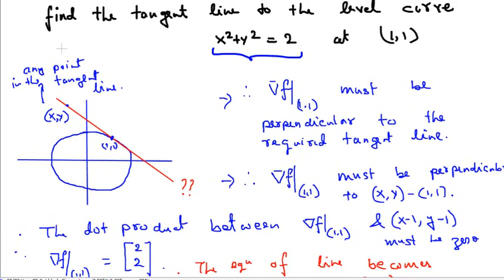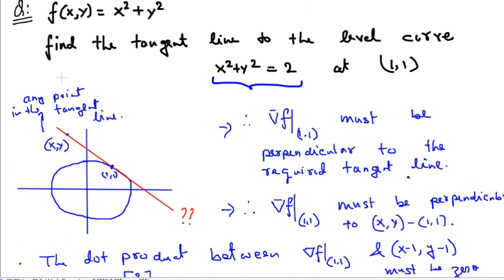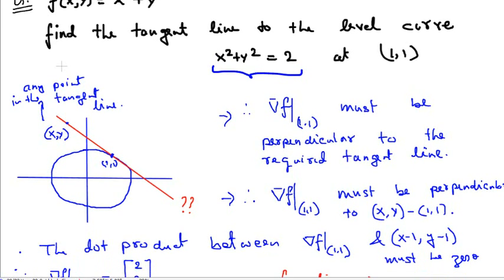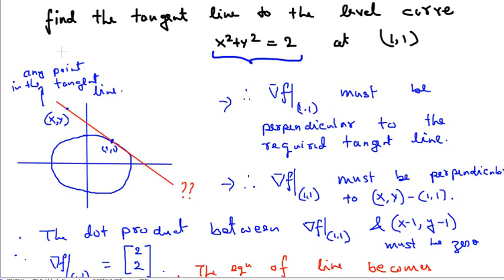Let's summarize once again. We had the function f(x,y) = x² + y². We had to find the tangent line to the level curve f(x,y) = 2 at the point (1,1). Now, if we take the gradient of f at that point, the gradient must be perpendicular to the level curve — that is, perpendicular to the tangential direction of the level curve, and therefore perpendicular to the tangent line.